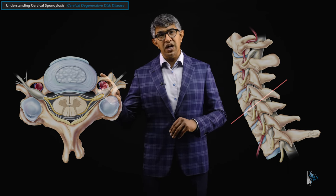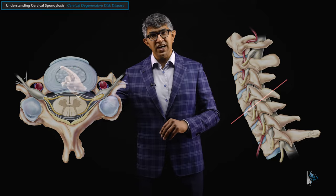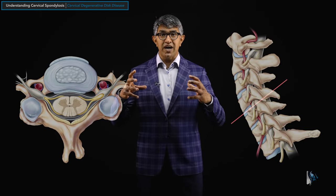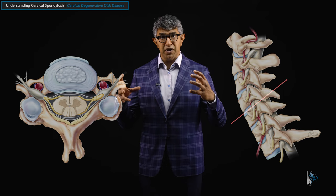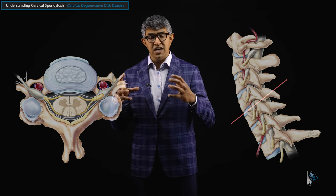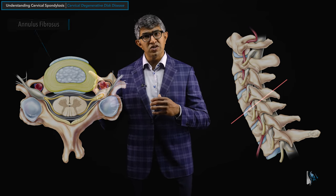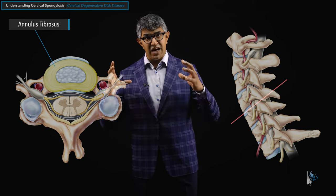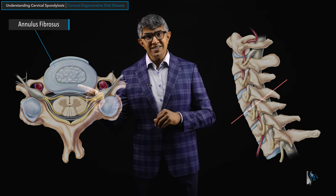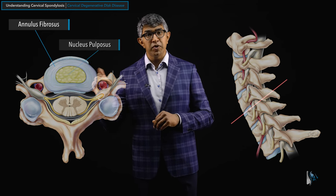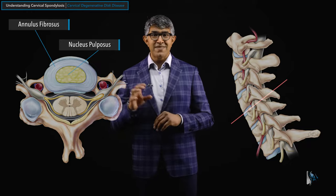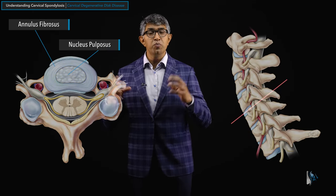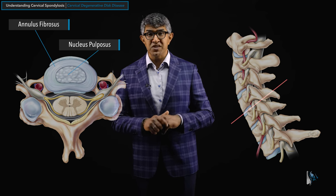Now let's drill in on the disc itself. You can see there's a belt on the outside — a very tight, fibrous, tough lining that contains the pulp. This structure is called the annulus fibrosis; that's the outside of the disc. The inside of the disc is called the nucleus pulposus, and that is the spongy part that gives it its cushion.